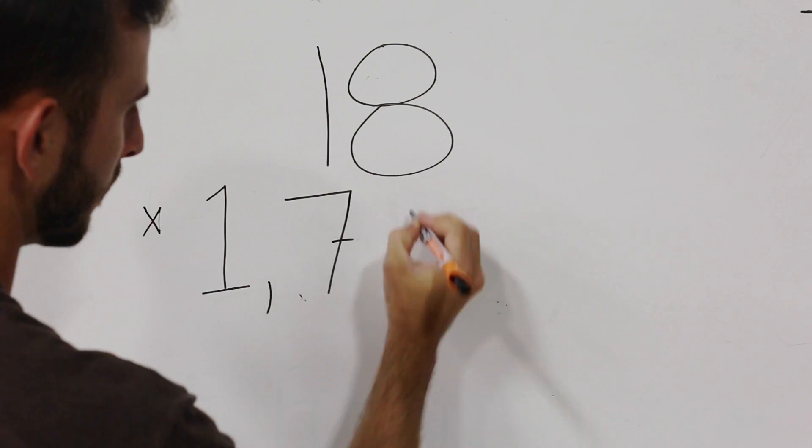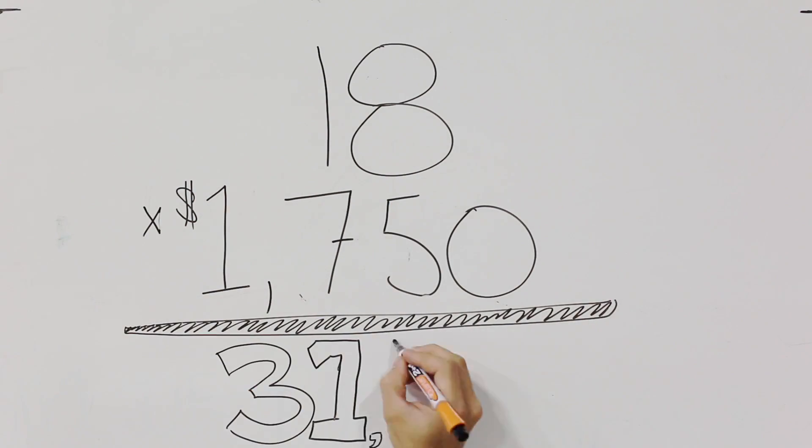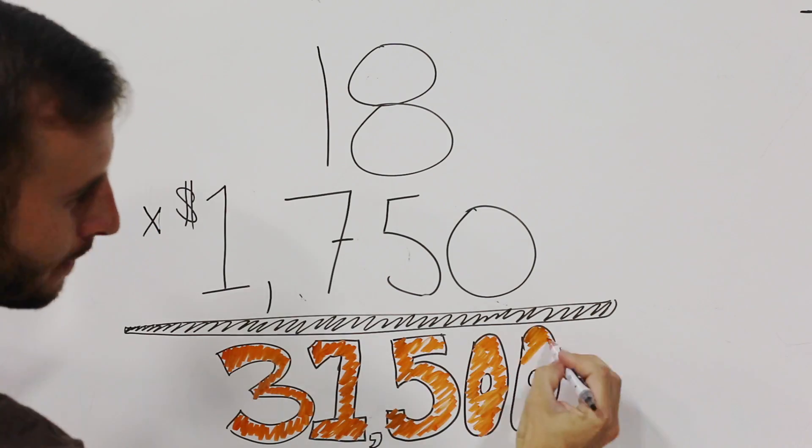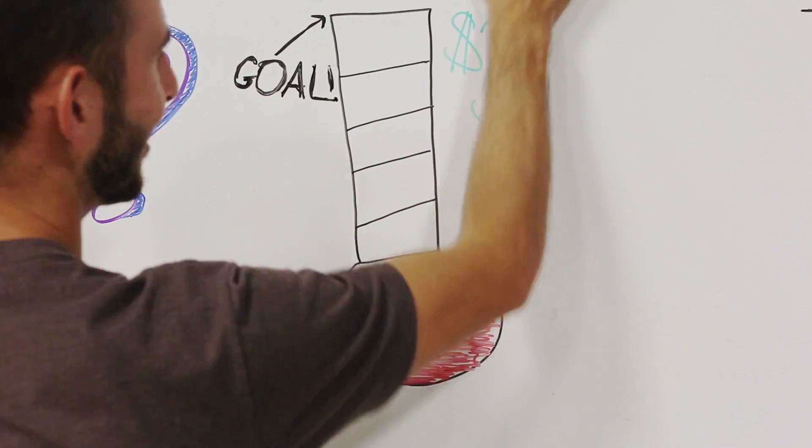18 people going on a mission trip at a cost of $1,750 each is loads of money. So what do we do? We plan a fundraiser and we set a goal, but that number's big.